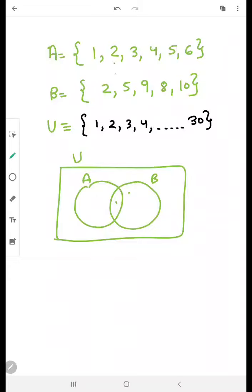So here what are the elements which are common? 2 and then 5. So we will write here 2 and 5. Or I can write like A intersection B.